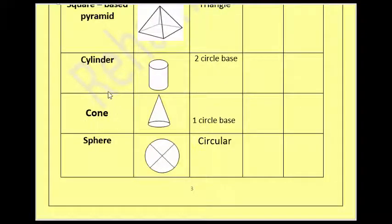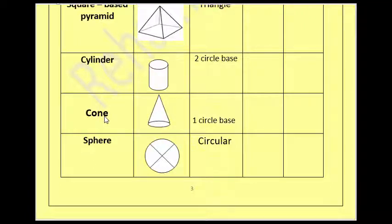The cone — repeat after me: cone. The cone is like the ice cream cone or your party hat. This is called a cone. The cone has one circle base.